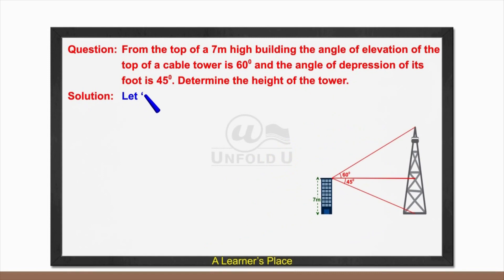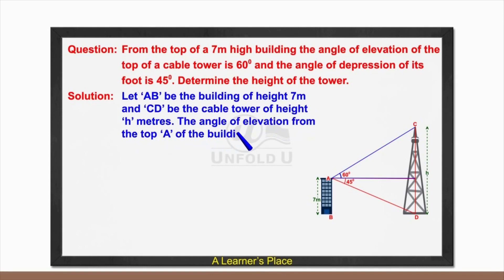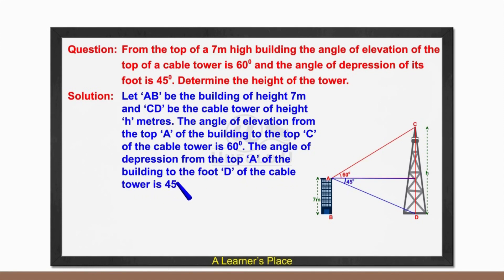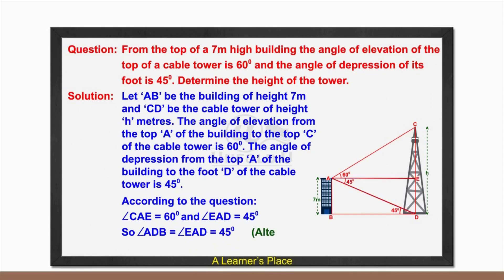Solution: Let AB be the building of height 7 meters and CD be the cable tower of height h meters. The angle of elevation from the top A of the building to the top C of the cable tower is 60 degrees, and the angle of depression from A to the foot D of the cable tower is 45 degrees. So angle CAE = 60° and angle EAD = 45°, which means angle ADB = angle EAD = 45° (alternate angles).